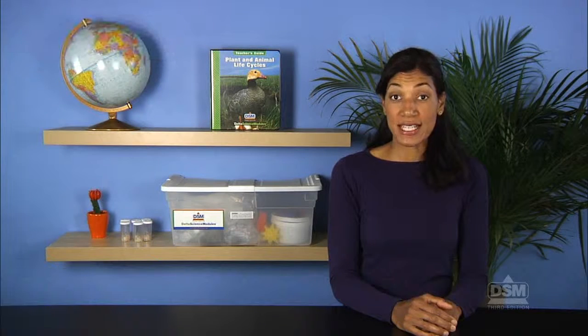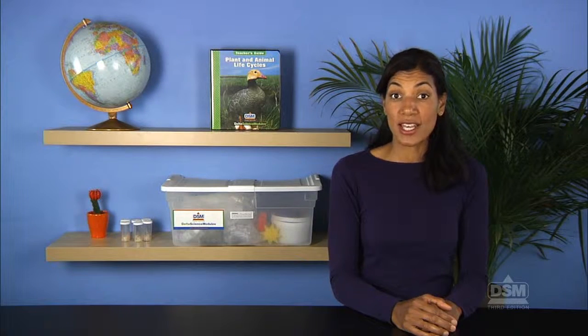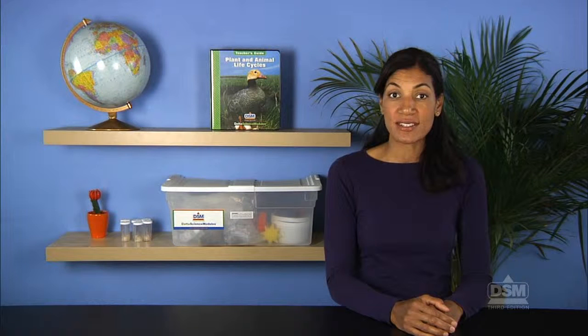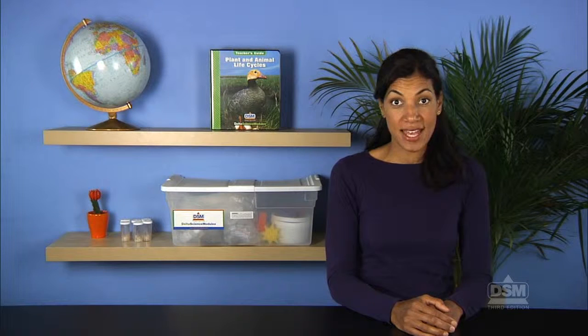To begin the activity, introduce the activity by directing students' attention to the chart, Characteristics of Living, Non-Living, and Dead Things. If necessary, remind students that characteristics are the features or qualities that an object has.